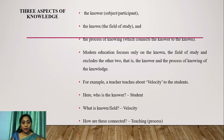The knower is the subject or participant. The known is the field of study in which the knowledge is dealt with. The third is the process of knowing, which connects the knower and the known. Modern education focuses only on the known — that is the field of study — and excludes the other two: the knower and the process of knowing.